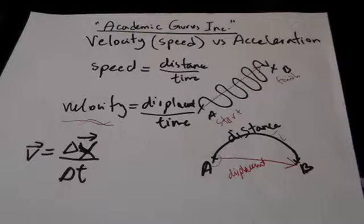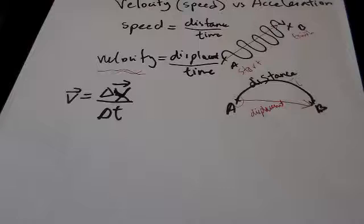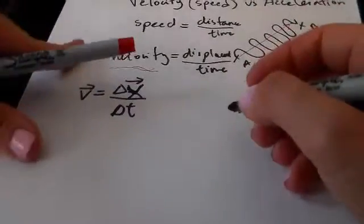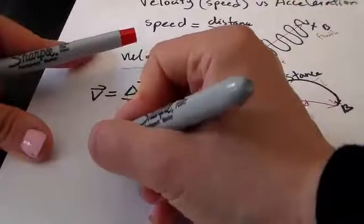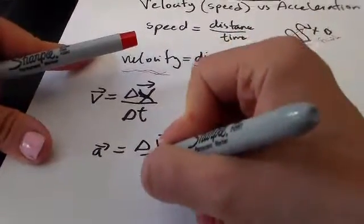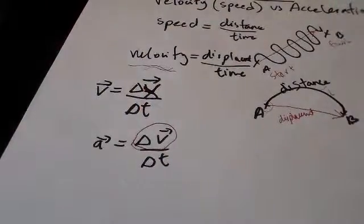But there is another word that for some reason students think is also somehow velocity, and that is called acceleration. There is a huge difference between acceleration and velocity. Let's just see what acceleration is defined to be. Essentially, acceleration is defined to be the change in velocity over time. As you see, in the numerator, basically what I have is that I have change in velocity, and not velocity itself.